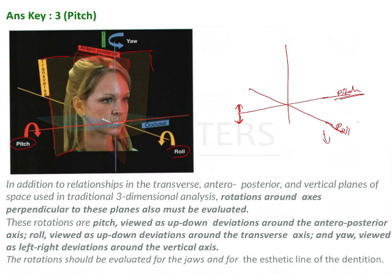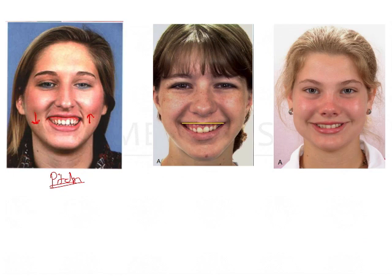With roll, one side moves down while the other moves up — this is along the transverse plane. As seen in this image, the right side of the patient appears to have rotated downwards while the left side has rotated upwards. This rotational tendency along the transverse plane is called roll.